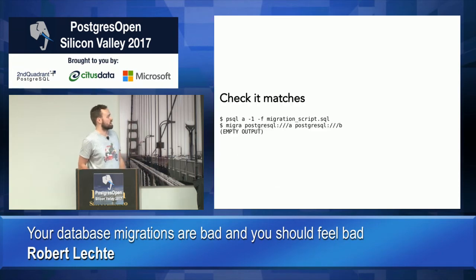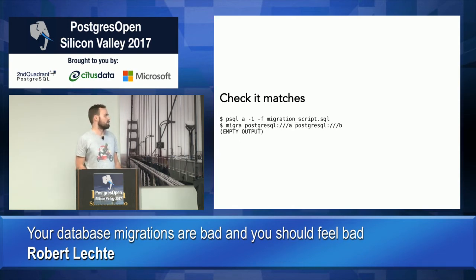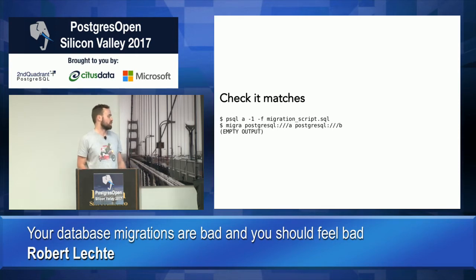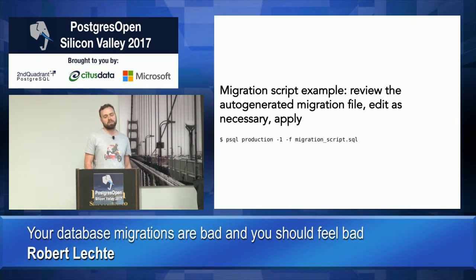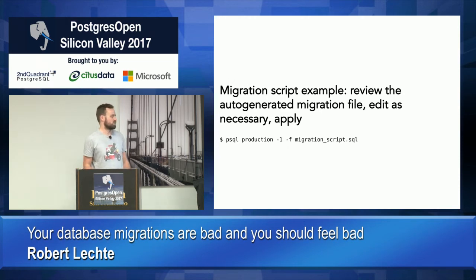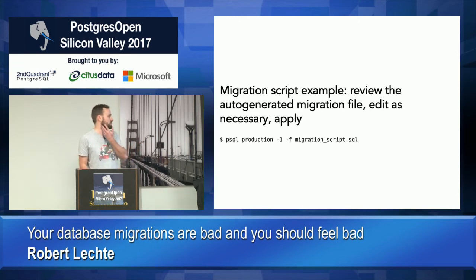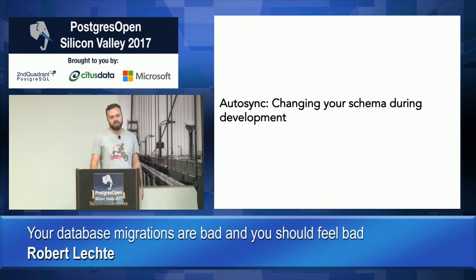Take that output and put it in a migration script, apply it to A, and confirm the script is correct by running the command again. As with most diff tools, if you get empty output then you've confirmed the databases match. Then review the file — it's not fully automatic. If there's data you need to move out of old tables before dropping them, or data to copy into new columns, add that to your file. When you're happy it's going to work, apply it to production and your migration has been applied.